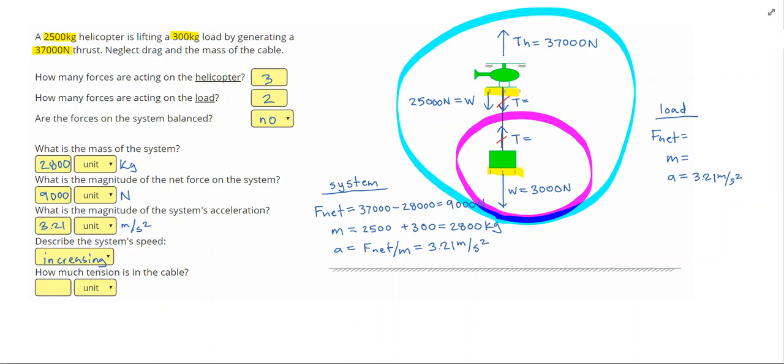I know the load by itself, its mass is 300 kilograms. Then I can apply Newton's second law, so net force equals mass times acceleration, giving me 300 times 3.21, or 964 Newtons.